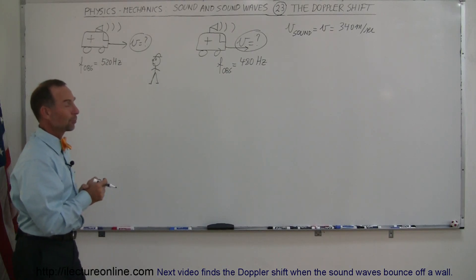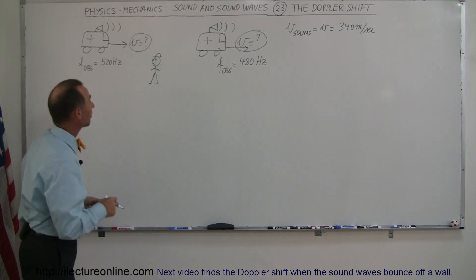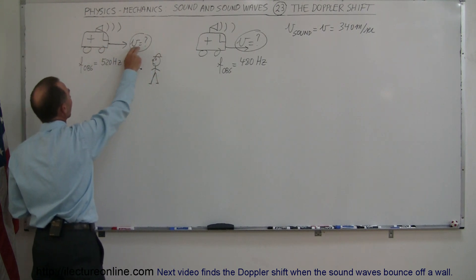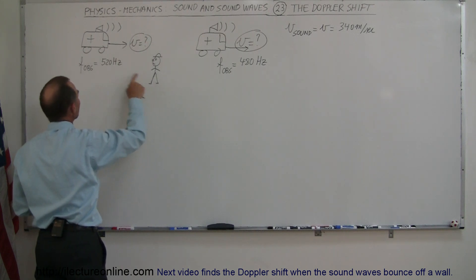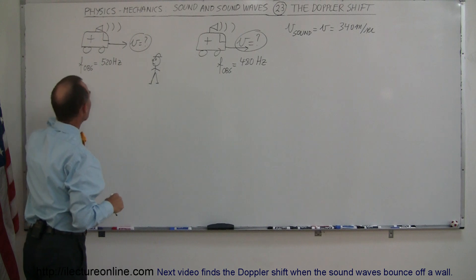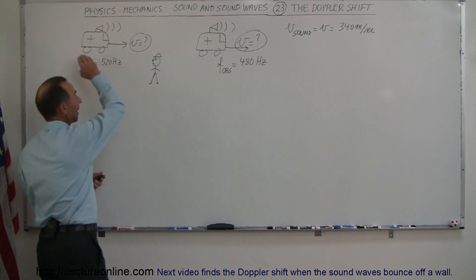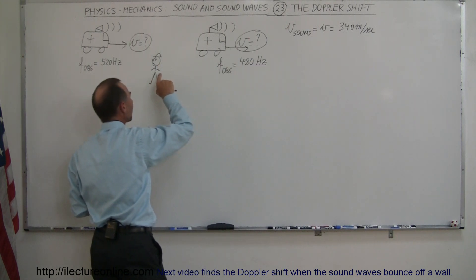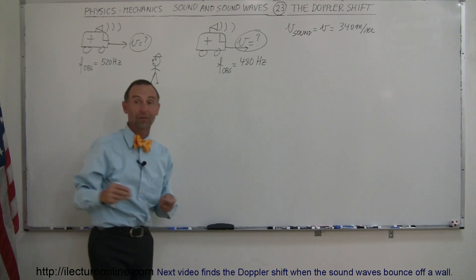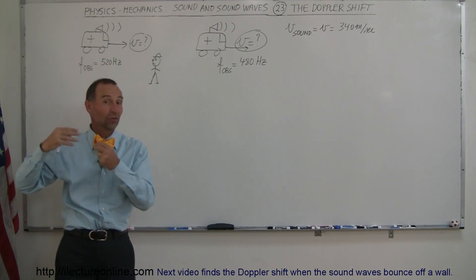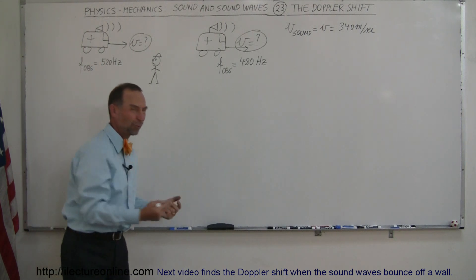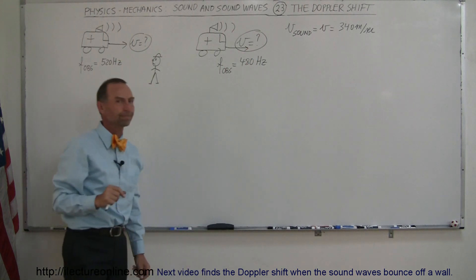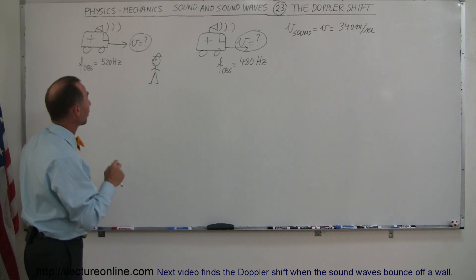Here we have a slightly more challenging problem working with the Doppler shift. An emergency van is rushing to the hospital with a sick patient moving at some high velocity. The observer hears the frequency from the siren to be 520 Hertz. Then as the van rushes past and is leaving the scene, the frequency observed drops to 480 Hertz. The question is: how fast was this van traveling? They're not telling us the actual frequency of the siren.